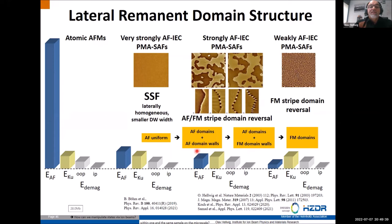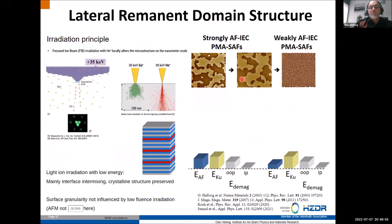Looking at remnant domain structures: in the first case the system is uniform with no domains; in the middle case you have a uniform out-of-plane loop but if you in-plane demagnetize the system you can trap antiferromagnetic domains, giving the 'tiger tail' precursor state at the AF domain walls — ferromagnetic one-dimensional stripe domains that can grow into two dimensions. The overall progression goes: AF uniform → mixed AF domains with AF domain walls → AF domains with ferromagnetic domain walls → fully ferromagnetic domains. These domain structures are not found in intrinsic atomic antiferromagnets.